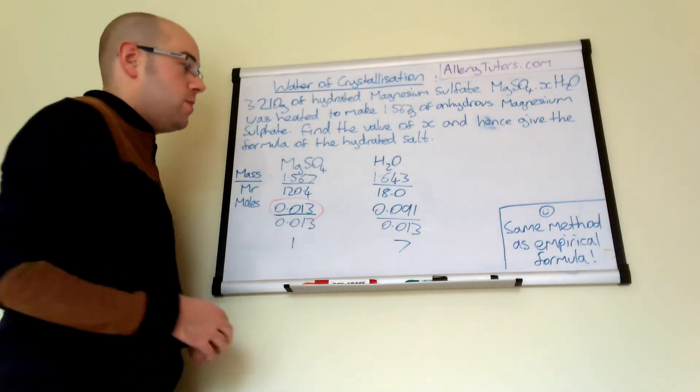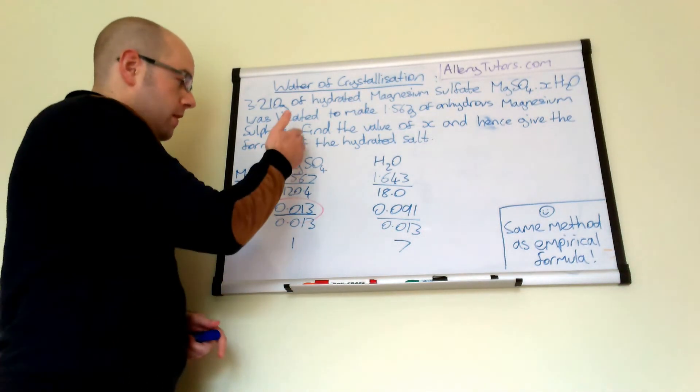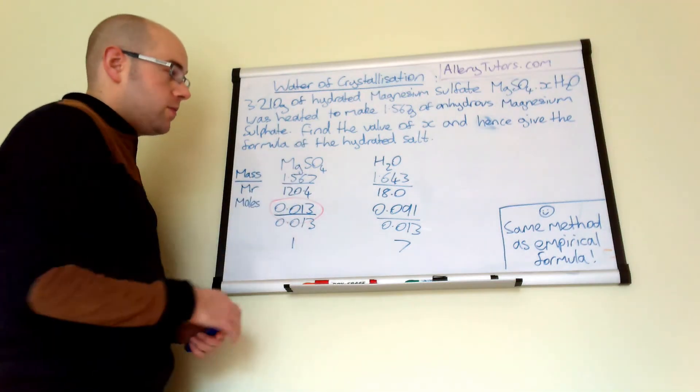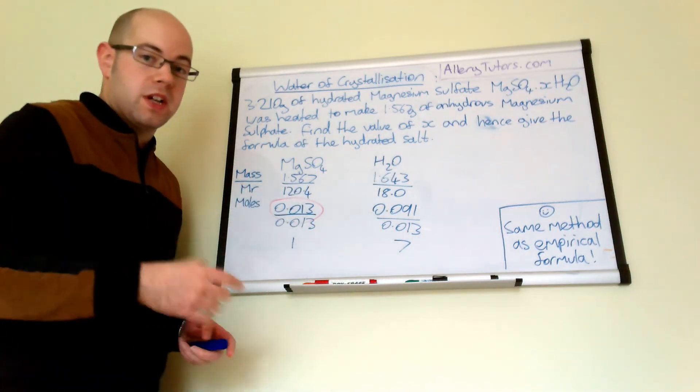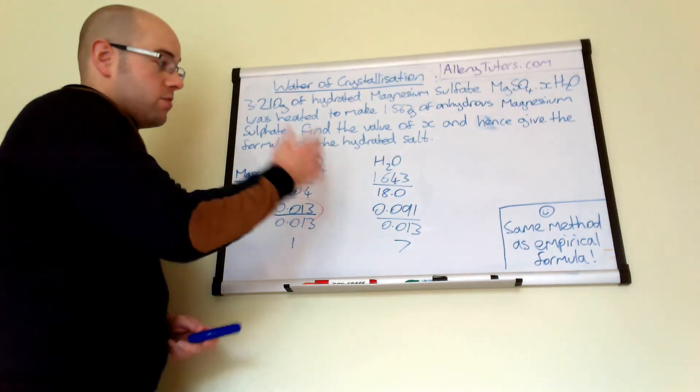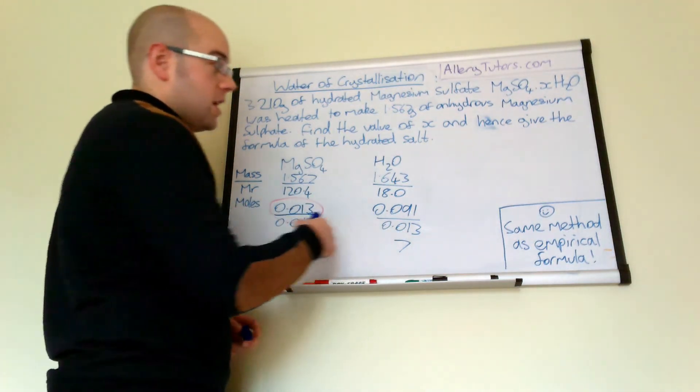Now, you can see here straight away, we've got a ratio. We know that for every 1 magnesium sulfate, we have 7 waters attached to it.